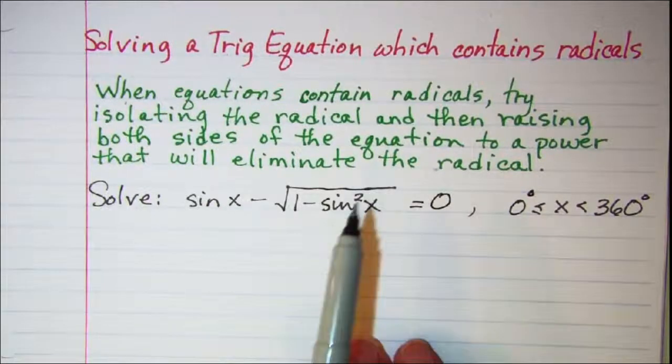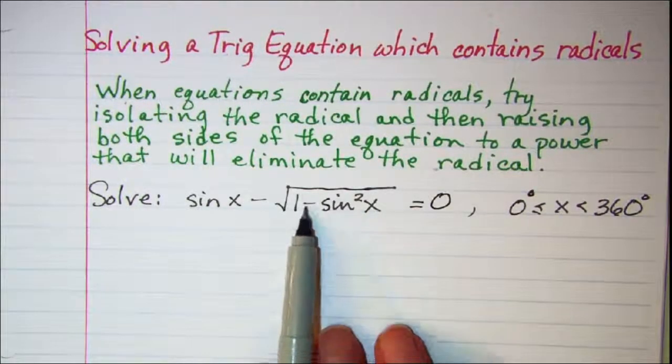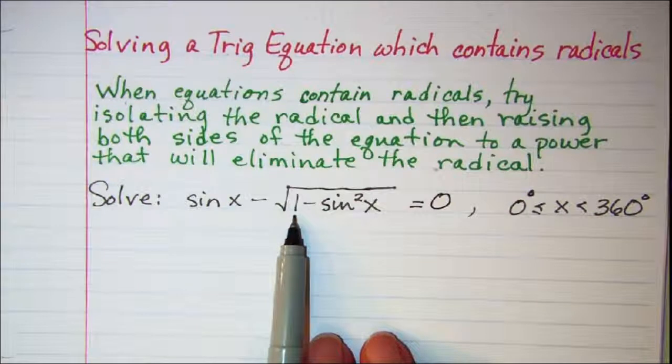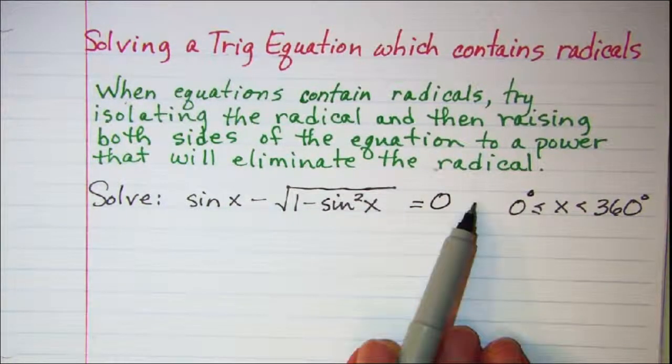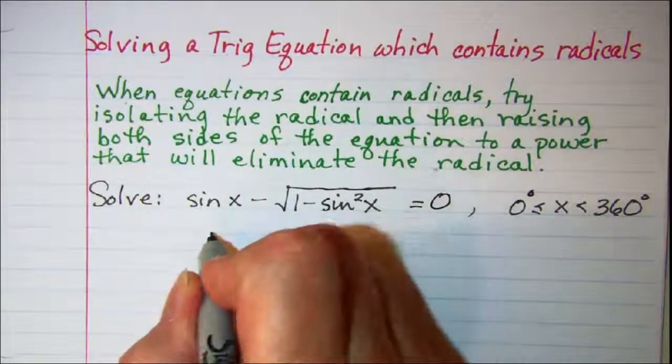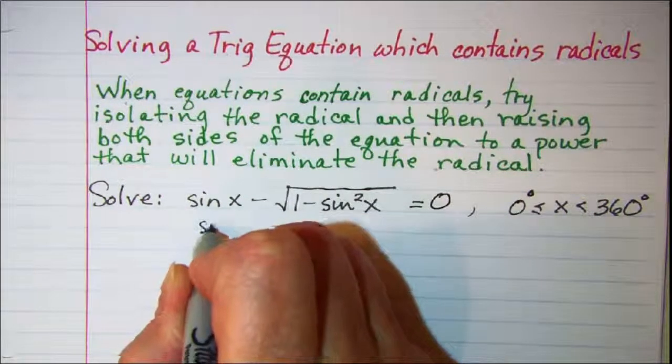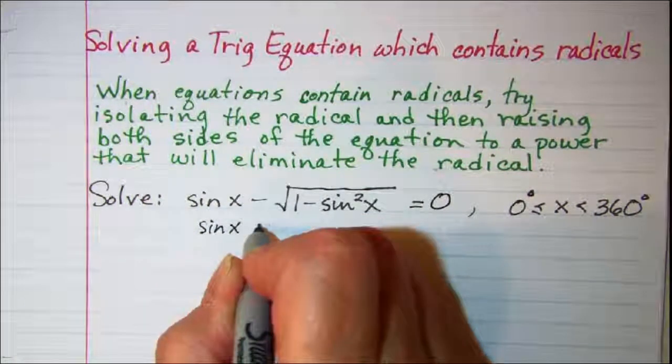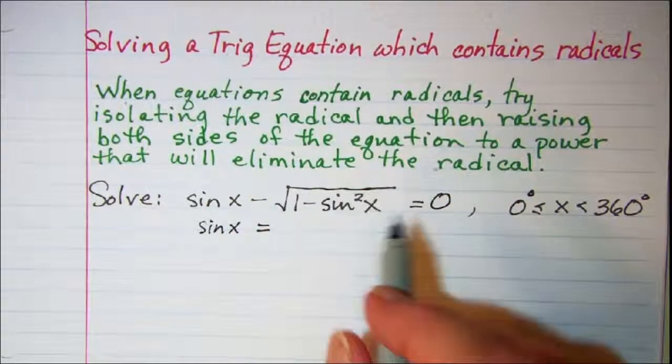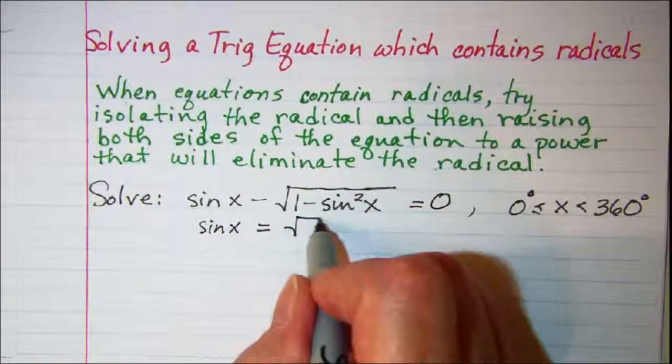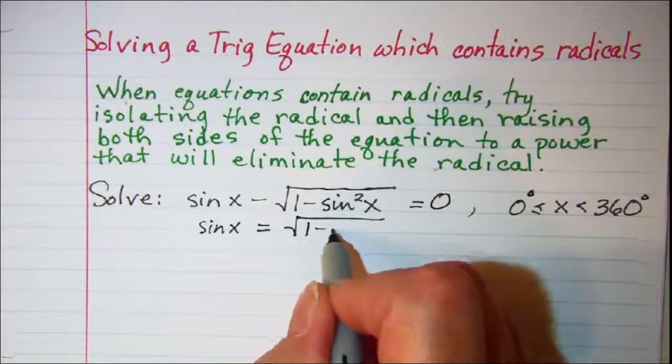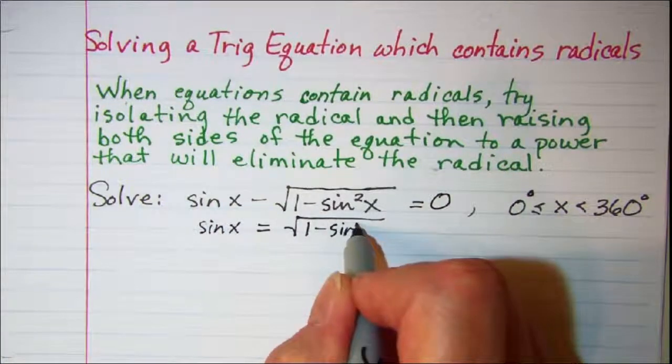To isolate the radical, we'll add square root of 1 minus sin squared x to both sides and move this term to the right side. That will give us sin x equals the square root of 1 minus sin squared x.